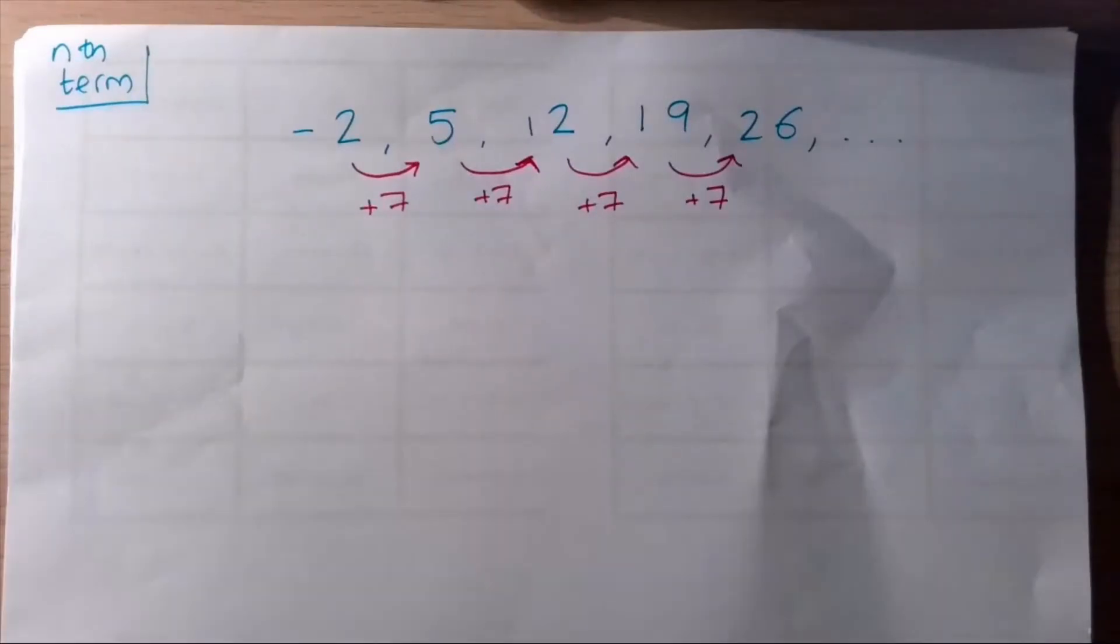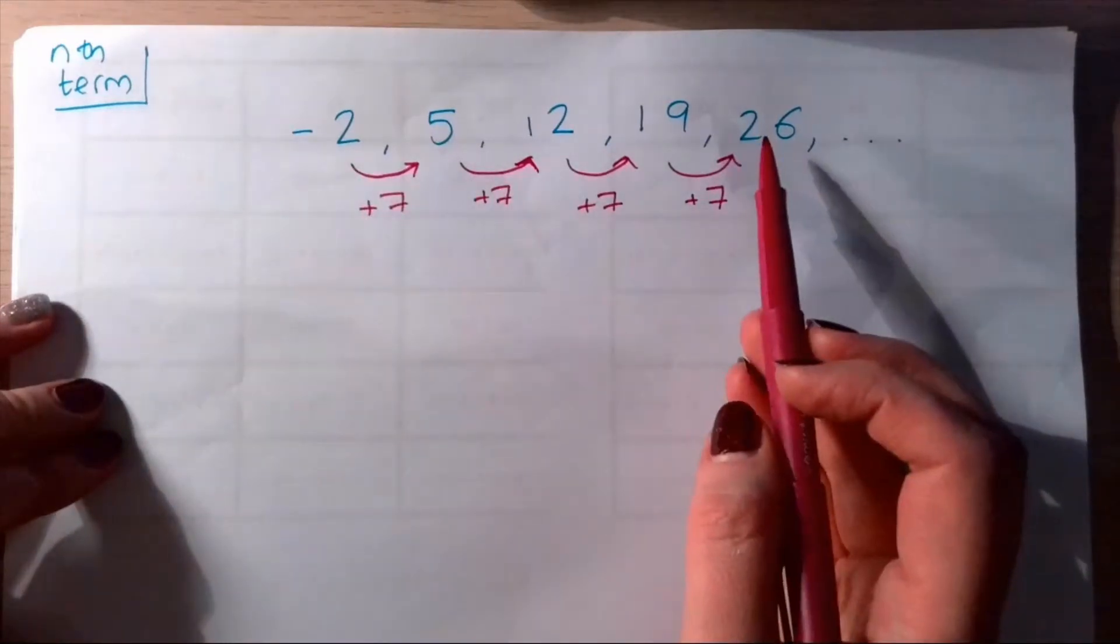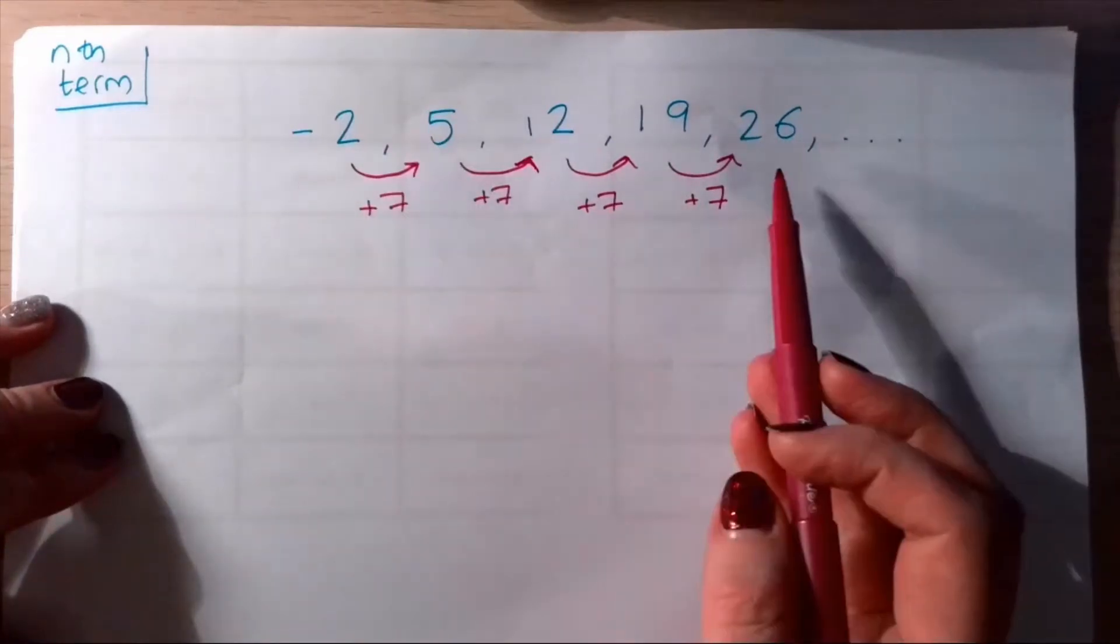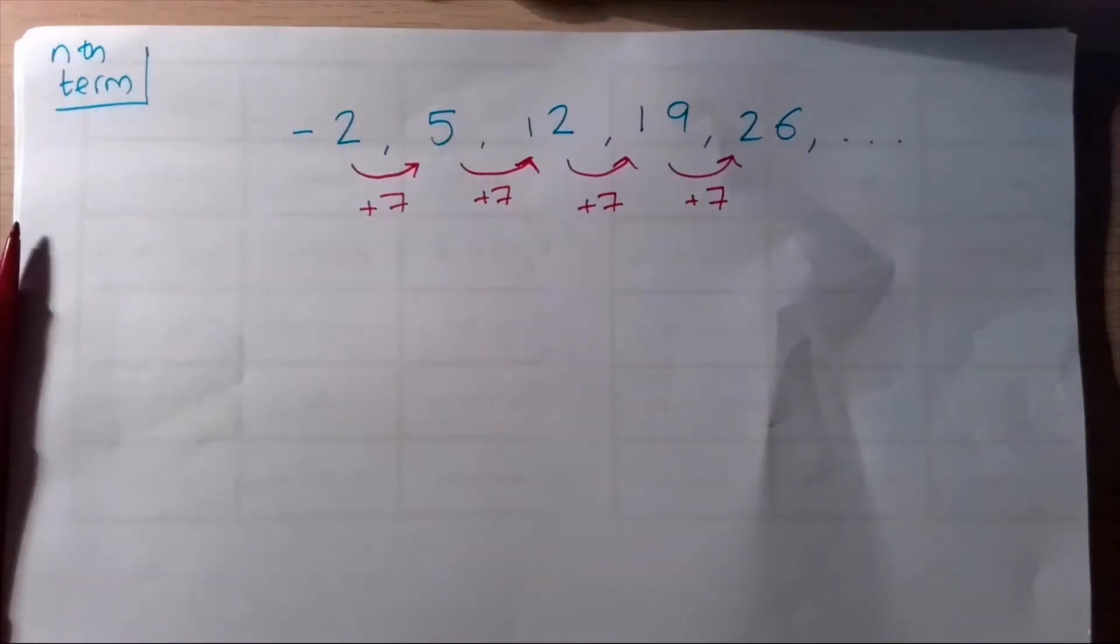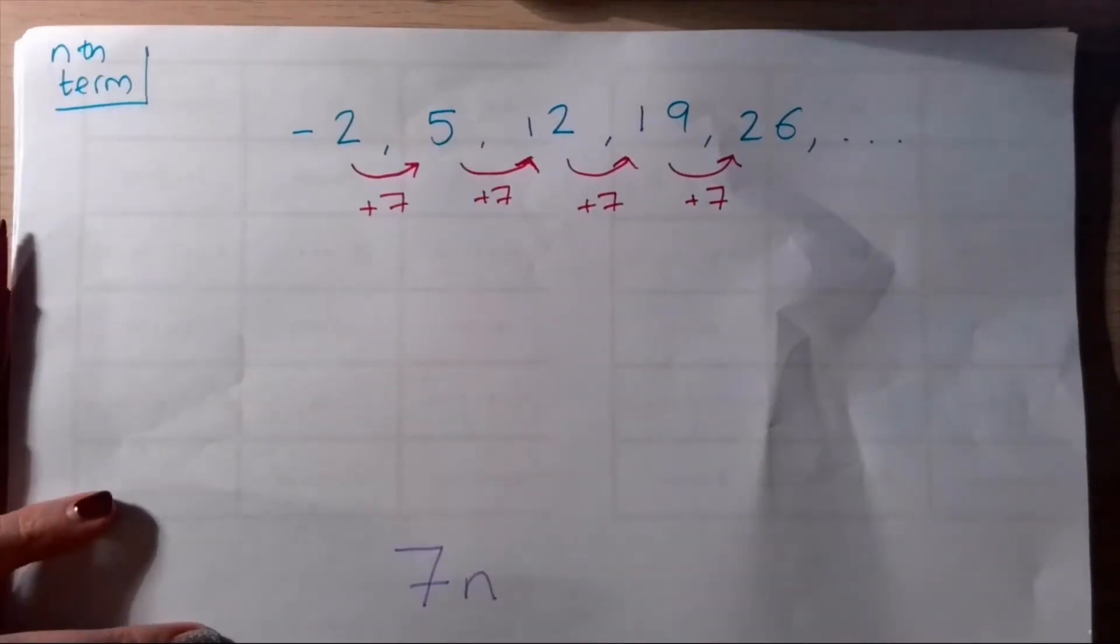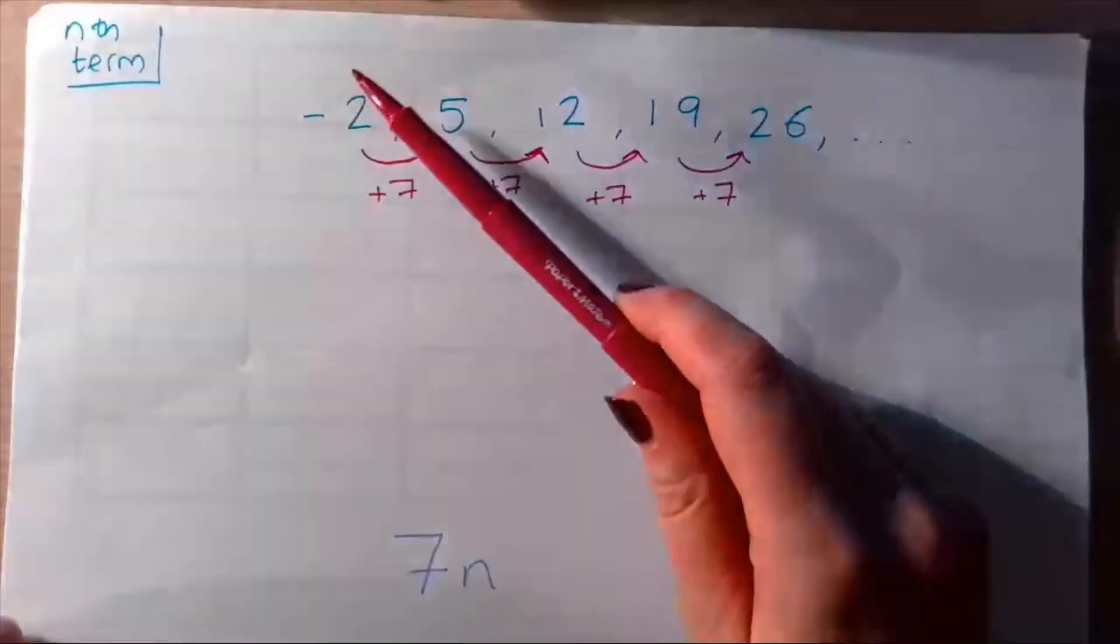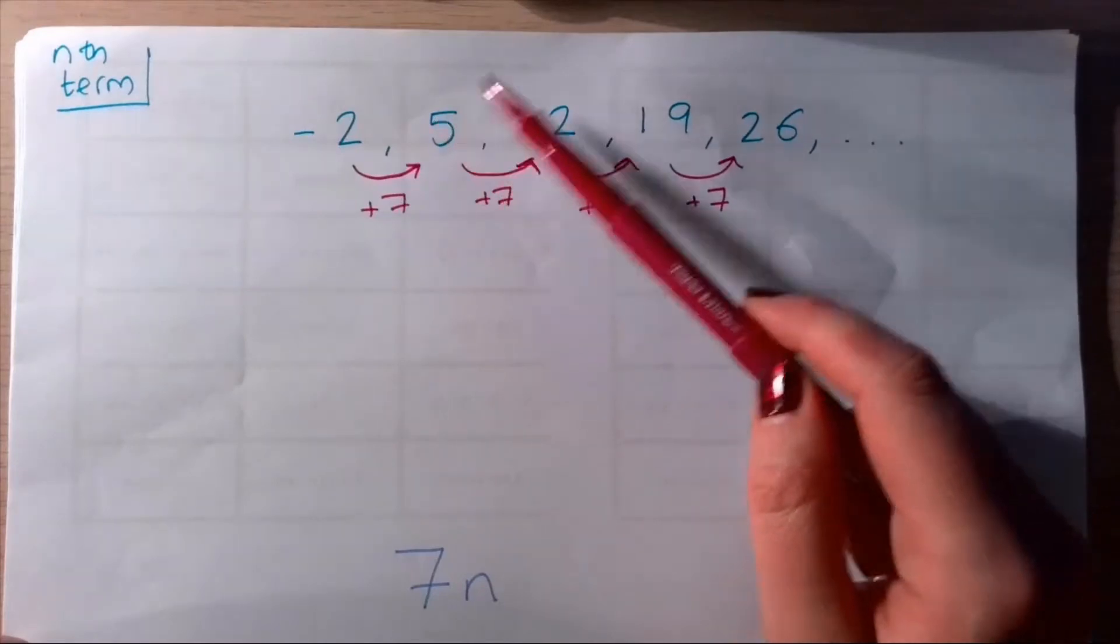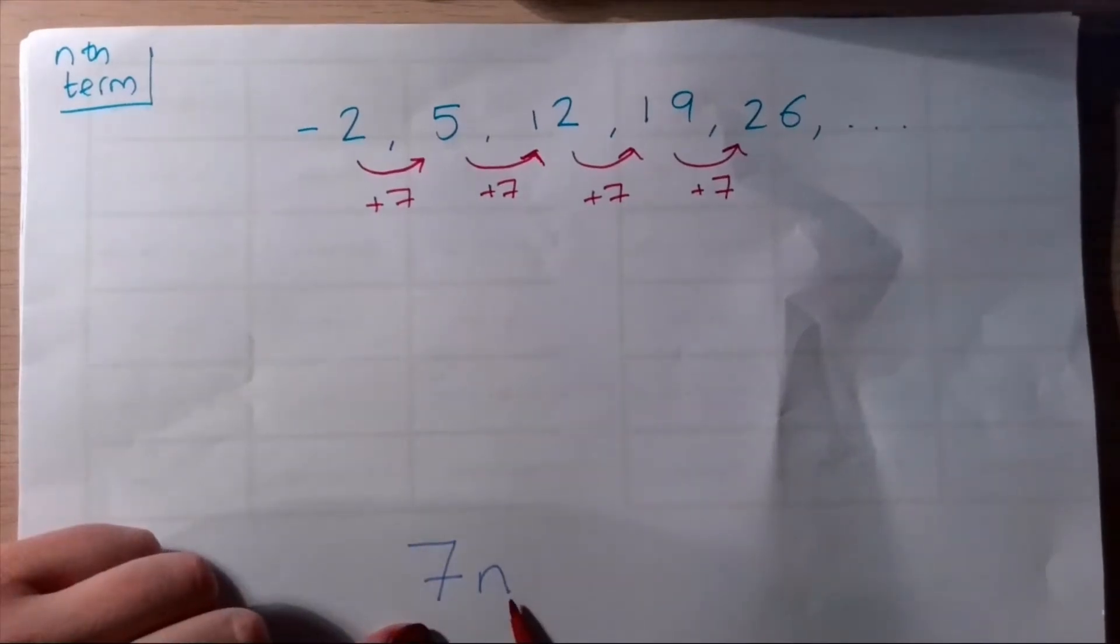We're going up in sevens, and we already know a very famous sequence that goes up in sevens—that is our seven times tables. This sequence has got something to do with the seven times tables. It isn't the seven times table, but it's related to it, like the cousin of the seven times tables. To write out our seven times tables, the piece of maths for that is 7n. That is the nth term for our seven times tables, because if n is one, seven times one is seven, seven times two is fourteen, and so on.